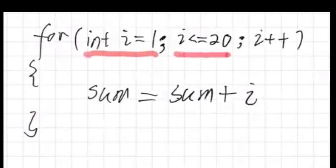And i less or equal than 20, that's my condition when the loop will stop, so this is also inclusive, that means 20 will be executed, and the last one,